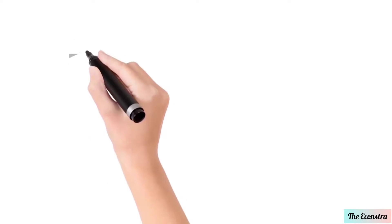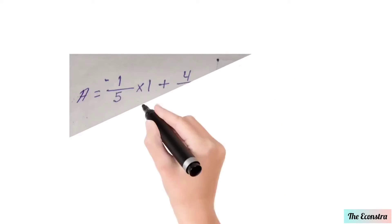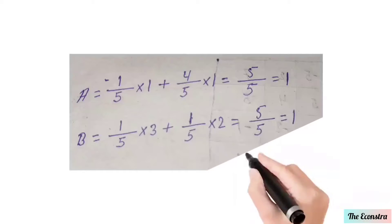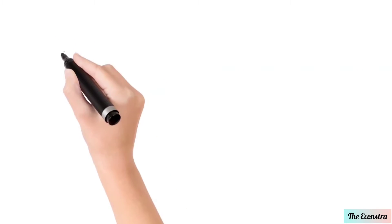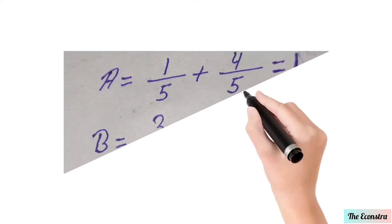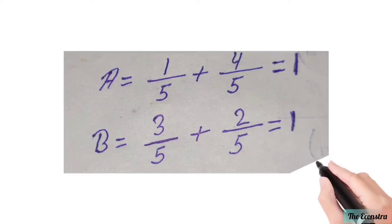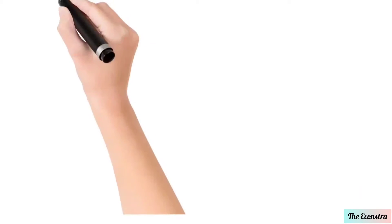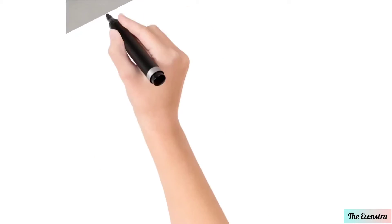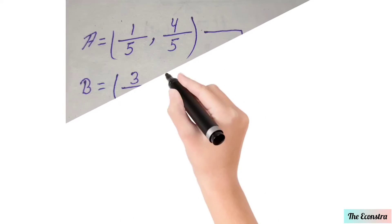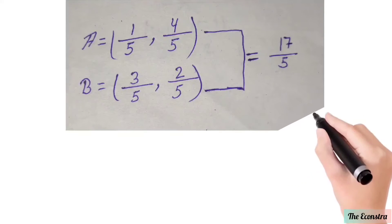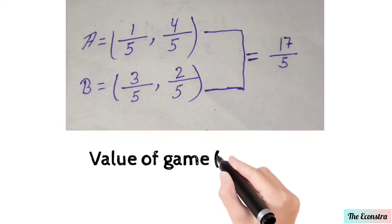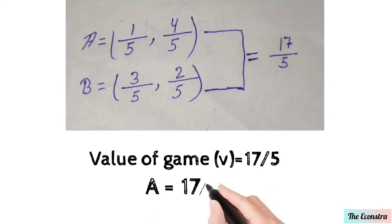Here the second method of calculation. Player A gets 1, player B gets 1, both are same. And this calculation is calculated where both players get 17/5 and 17/5. Here the value of game is represented V equal to 17/5. The value of A is 17/5 and B is 1.